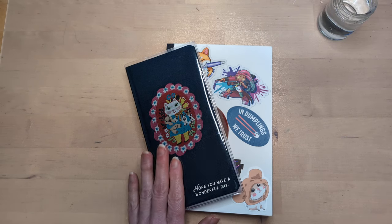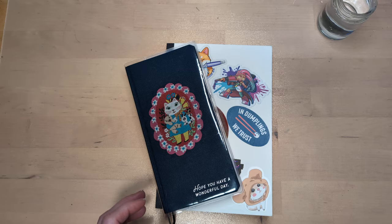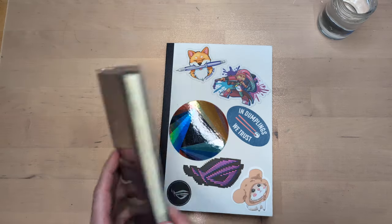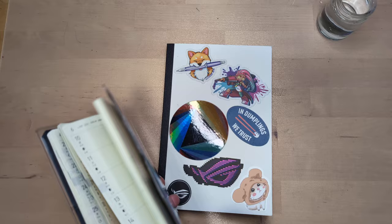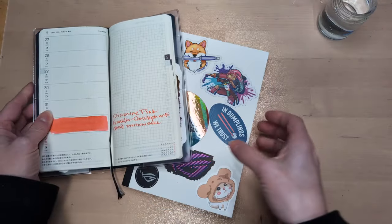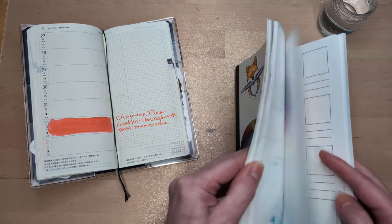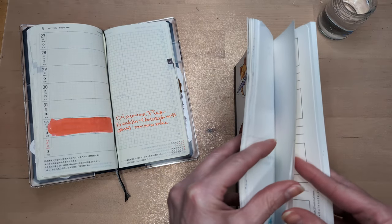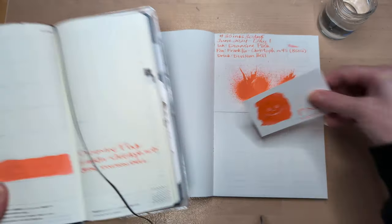Hi friends, welcome to 30 inks 30 days June 2024 day two. What did we do yesterday? Oh right, we did pink which is not pink. No drink today for the record, I'm not feeling fantastic. So here was yesterday's all dried.